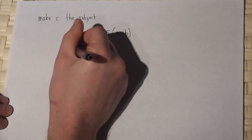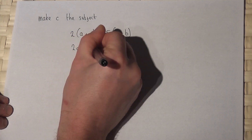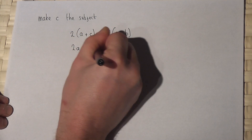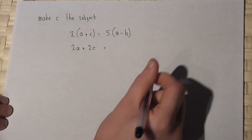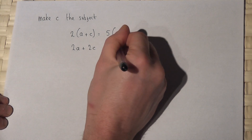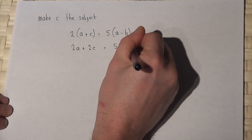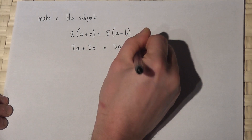So 5 times this by 2 gives 2a plus 2c, and times this by 5 gives 5a minus 5b.